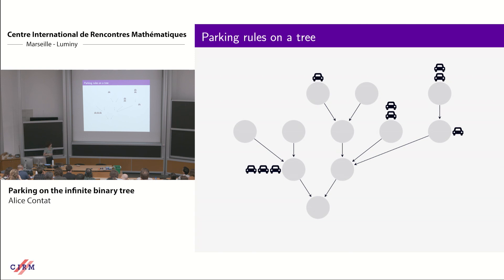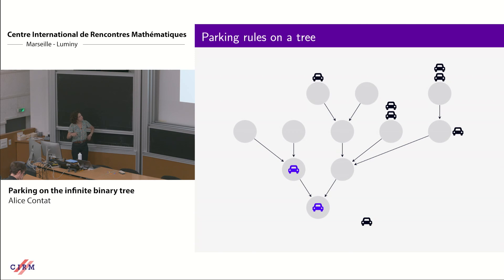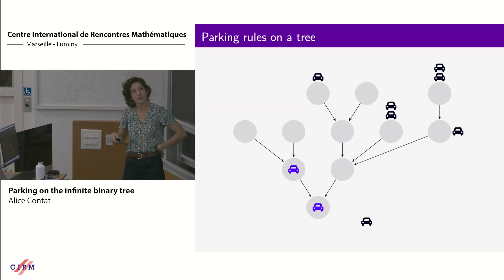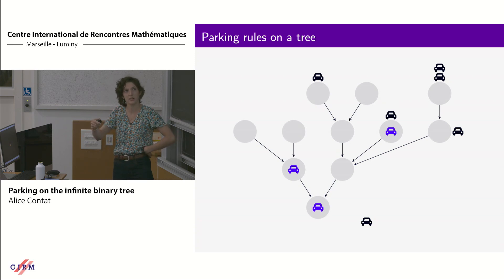We park the cars layer by layer, starting from the bottom. The first car parks there, the second follows the edge and parks at the root, and the third tries to park at its spot — it's already taken, it reaches the root, finds no free spots, and exits the tree without parking. Then the next two cars park: the first on its vertex, the second follows the edge and parks there.